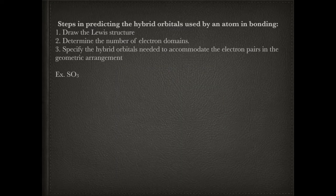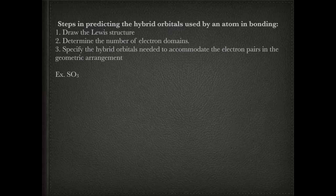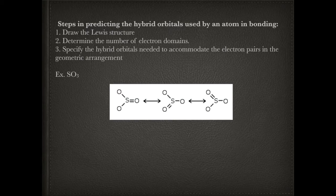You don't actually need to know the concept behind hybrid orbitals so much as you need to be able to predict what hybrid orbitals are going to form when given a specific molecule. First, you draw the Lewis structure. For SO3 — which is an example of resonance — the next thing you need to do is determine the number of electron domains. SO3 has two single bonds and a double bond, so that's only three electron domains.